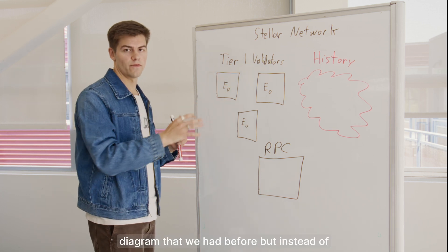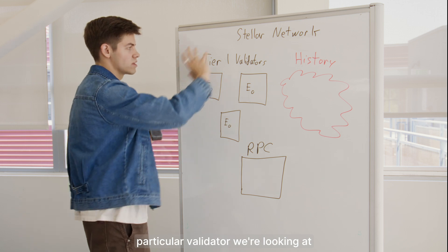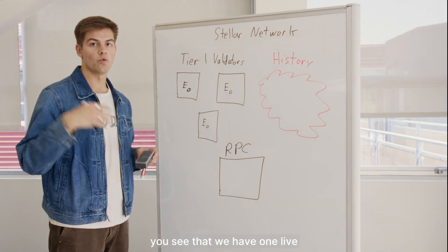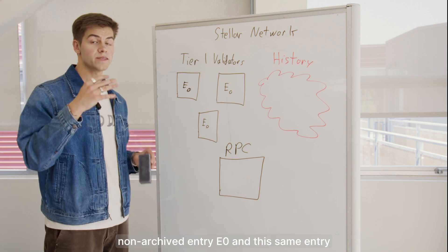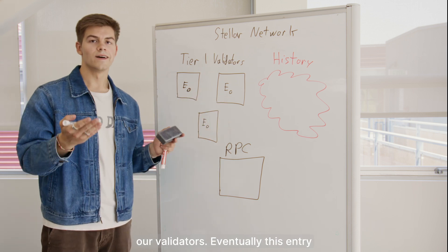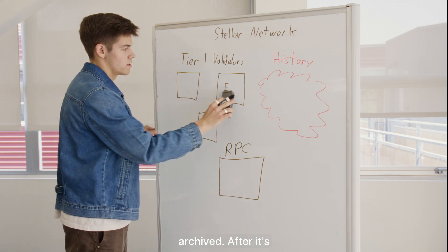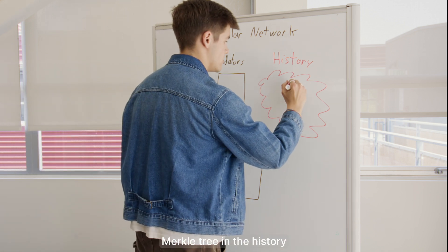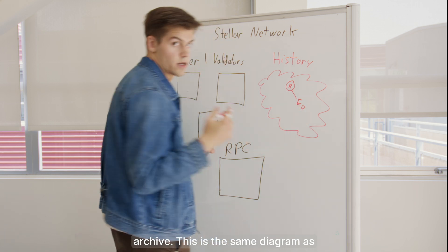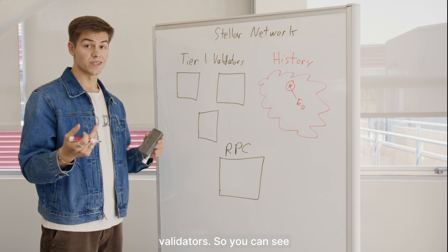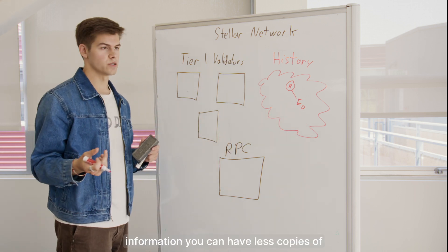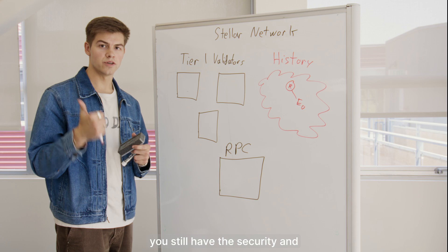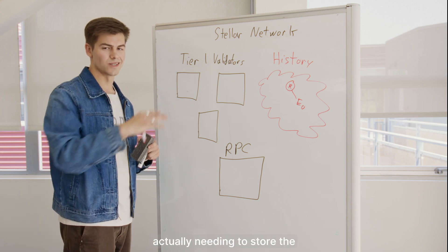Here we have the same diagram as before, but instead of zooming in on one particular validator, we're looking at the tier one validator set, the history archives, as well as our off-chain RPC providers. Here you see that we have one live non-archived entry, E0, and this same entry is replicated on each of our validators. Eventually this entry will run out of rent, at which point it's archived, deleted from all the validators, and then stored in our Merkle tree in the history archive. Even though some system still needs to store the archived information, you can have fewer copies of it in the history archive. Because each of these tier one validators still maintains the root, you still have the security and immutability of the blockchain, but with significantly fewer nodes actually needing to store the information.